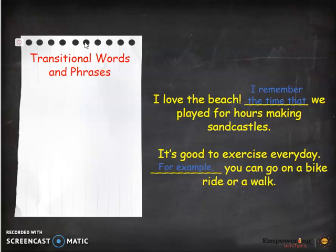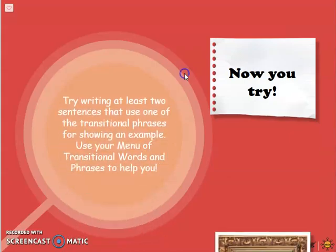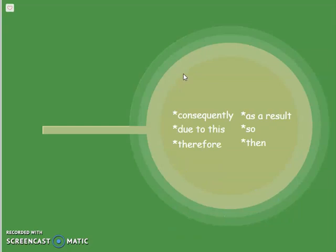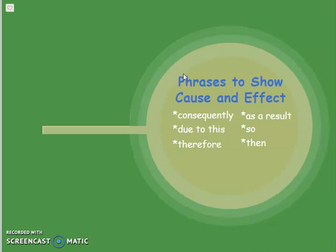Were you right? Let's look at some more transitional words. Consequently, due to this, therefore, as a result, so, then — these are all phrases that show cause and effect. Most of the time when you see transitional phrases in writing, they are to show cause and effect.